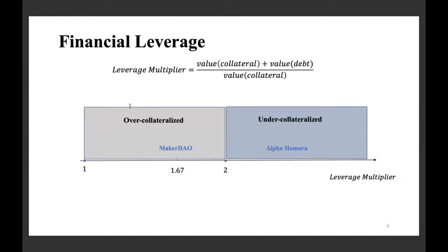We can use one parameter to describe the difference between those two lending types, which we call leverage multipliers. Leverage multipliers describe the span of assets after borrowing. For overcollateralized borrowing, the leverage multiplier is less than two — platforms like MakerDAO and Compound fall into this category. For undercollateralized borrowing, the leverage multiplier is greater than two, with platforms such as Alpha Homora. There is a lot of academic work on overcollateralized borrowing, but in our work we will focus on undercollateralized borrowing.